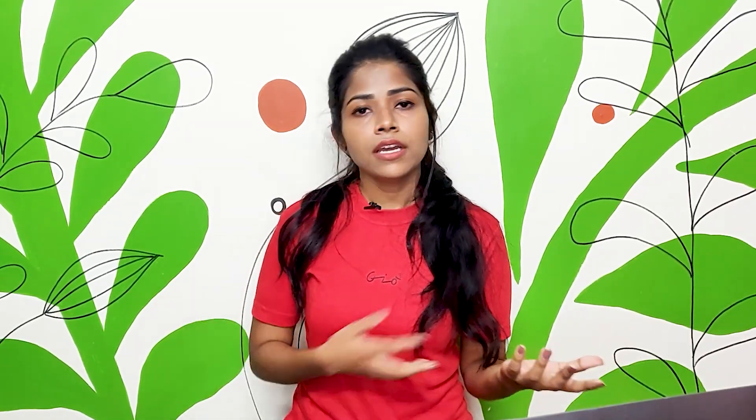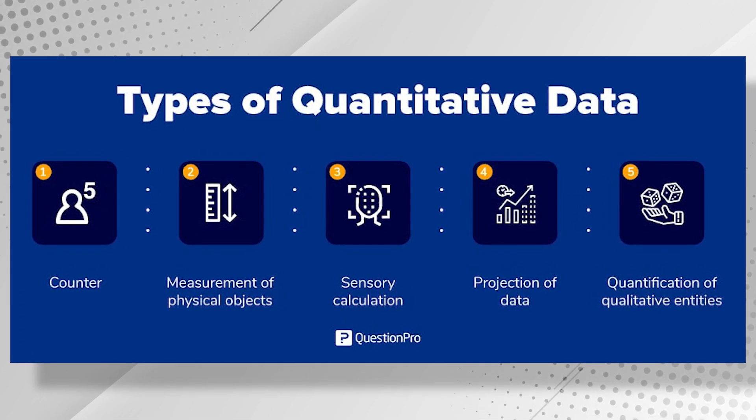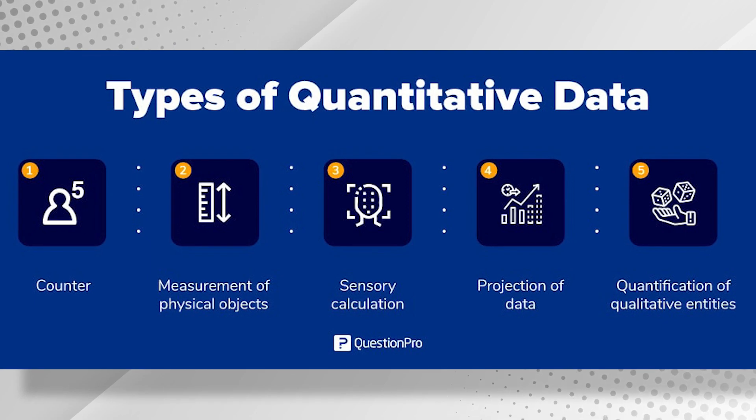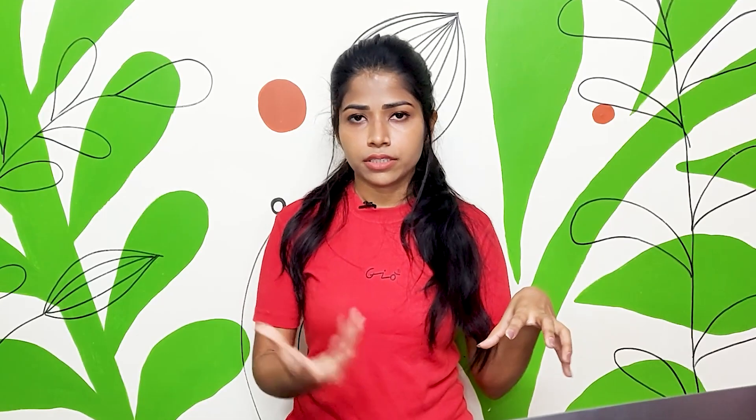Quantitative data is something you collect before going into qualitative data. You look at what things were happening with a particular product — competitors, how they managed before, what the core problem was, how many percentage of users were affected. Everything is collected in quantitative data and presented in a graphical manner, pie charts, or infographics.